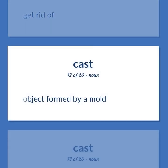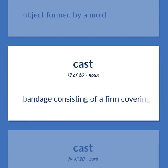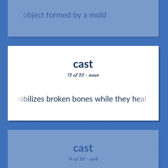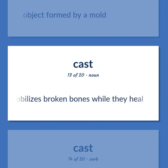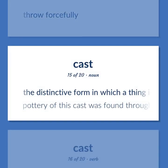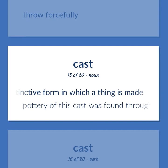Object formed by a mold. Bandage consisting of a firm covering, often made of plaster of paris, that immobilizes broken bones while they heal. Throw forcefully. The distinctive form in which a thing is made. Pottery of this cast was found throughout the region.